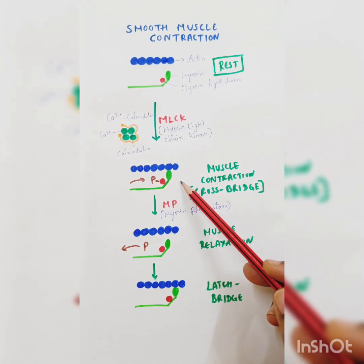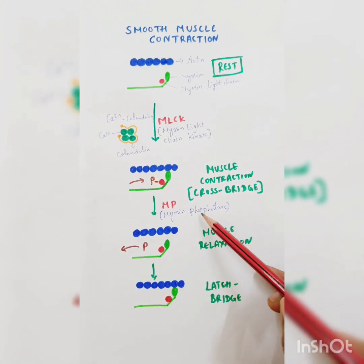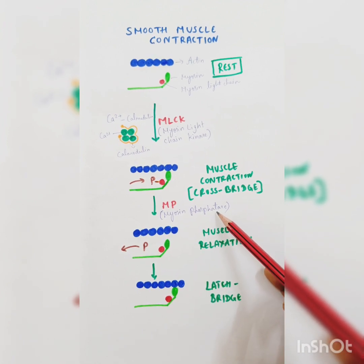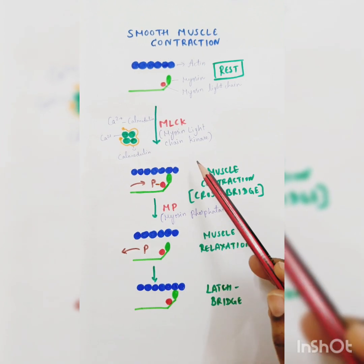Once smooth muscle contraction is over, myosin phosphatase enzyme gets activated. Phosphatase, as the name suggests, is an enzyme throughout the body responsible for removing the phosphate group.